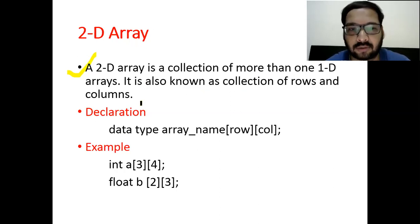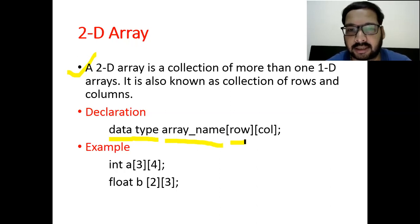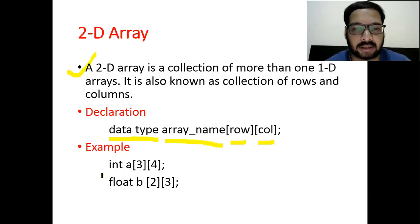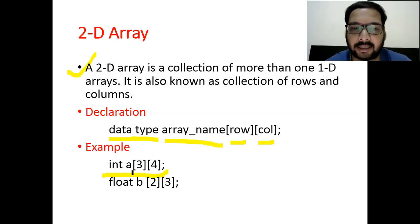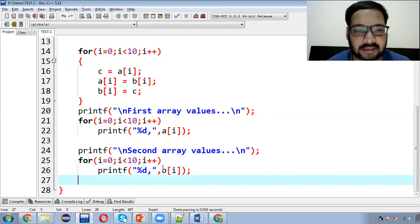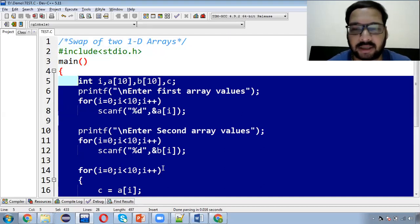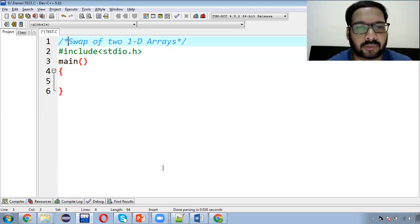A 2D array is also known as a collection of rows and columns. For the declaration, first we write the data type, then the array name, then the number of rows and the number of columns. For example: data type is int, array name is 'a', number of rows is 3, and number of columns is 4. Now let's look at the practical aspect — how and when would we need to make a 2D array?